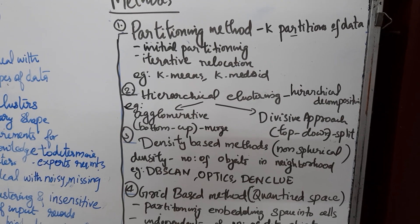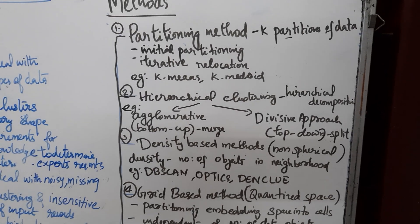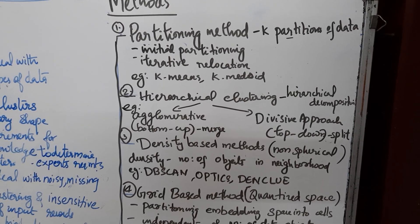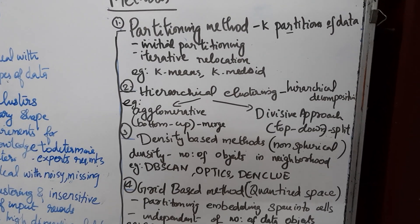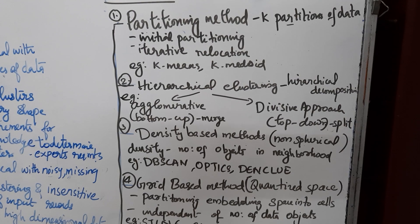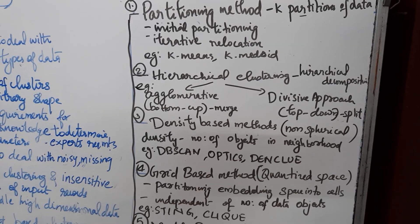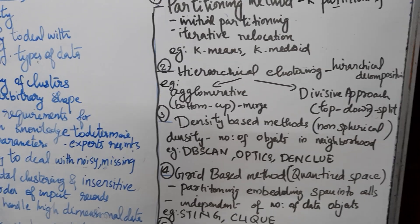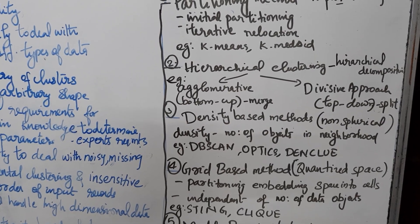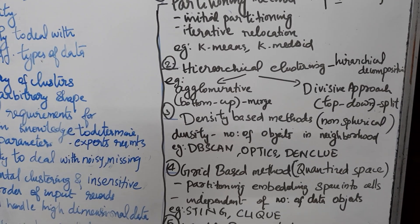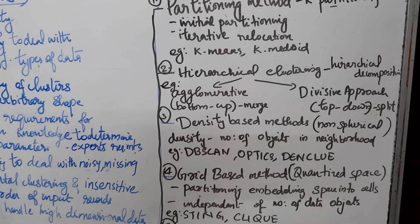In the agglomerative approach, first we find small clusters, then we merge those small clusters together, going bottom-up. The second is the divisive approach, which is top-down — we first find a big cluster and then split it into smaller clusters. Then the density-based method: it is not compulsory that all clusters should be in spherical shape, so we find the density, which means how many objects are in a neighborhood — how dense a cluster is. Examples include DB-SCAN, DN-CLUE, etc.